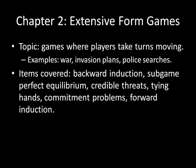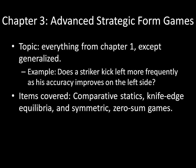The last chapter covers advanced strategic form games. This is essentially what we covered in chapter one, except we're going to generalize it. This allows us to ask really important questions like: does a striker kick left more frequently when he's kicking a penalty kick in soccer as his accuracy to the left side improves? In this chapter, we'll be talking about comparative statics — which is really the heart and soul of game theory — knife edge equilibria, and symmetric zero sum games.